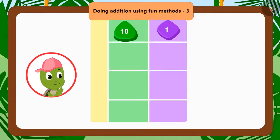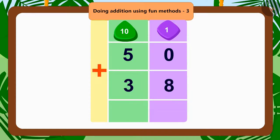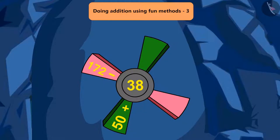Let us first solve the addition question on the windmill. If we add 38 to 50, what will be the total? That's right, 88. Come, let's fill the blank space.